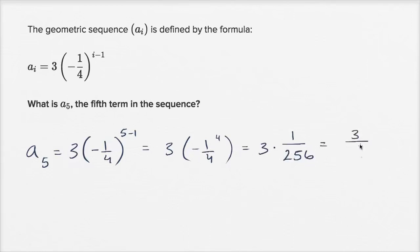So I get three over 256, and we're done. That's the fifth term in our sequence, positive three over 256.